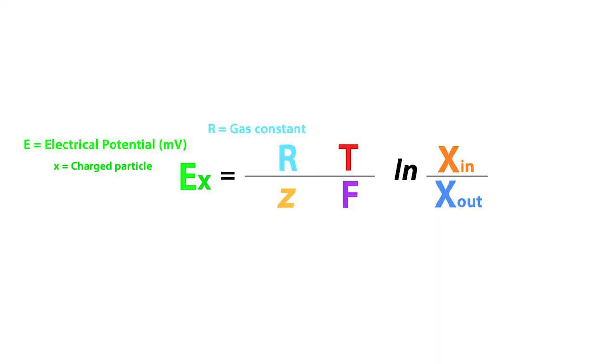R represents the gas constant, which equals 8.31 joules per Kelvin per mole. T represents the temperature in Kelvin, which equals 298 Kelvin at 25 degrees Celsius.